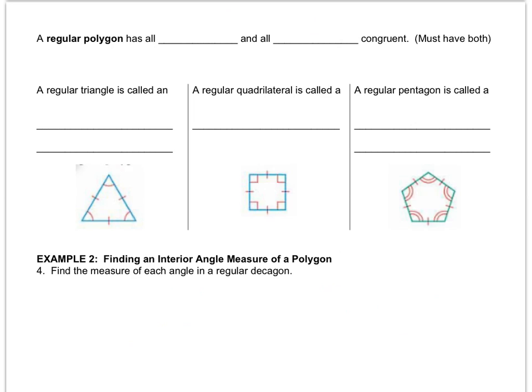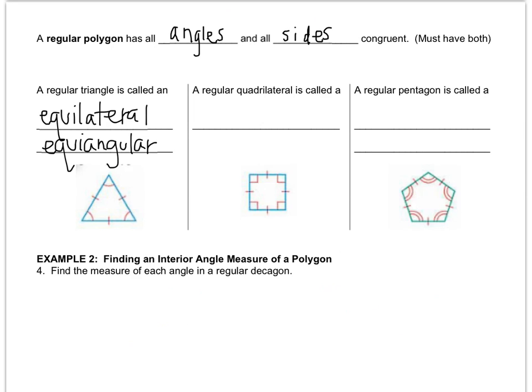There are also things called regular polygons, and a regular polygon has all angles and all sides congruent. This triangle has two names: based on its equal sides we call it equilateral — hopefully you've heard that before — and because it also has equal angles, some people call it equiangular. They use that name because all the angles are the same. That term doesn't really get used for other shapes, but it does happen with triangles.